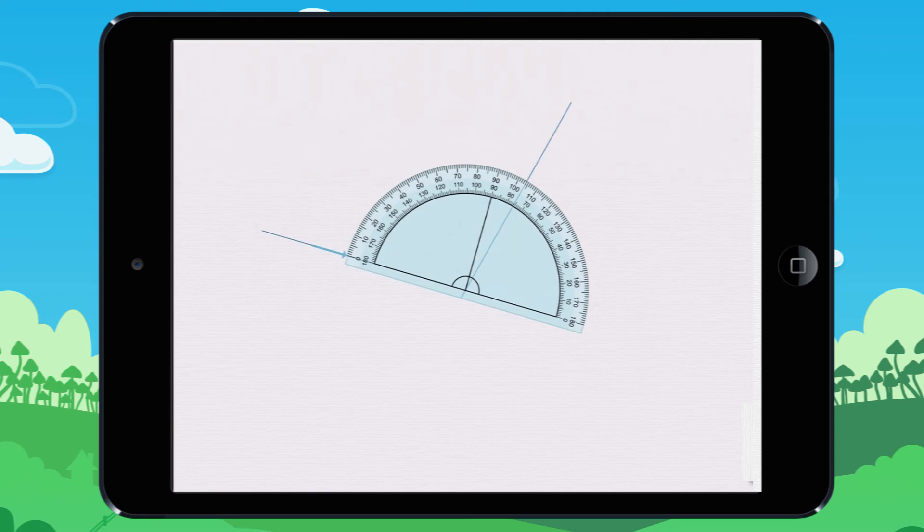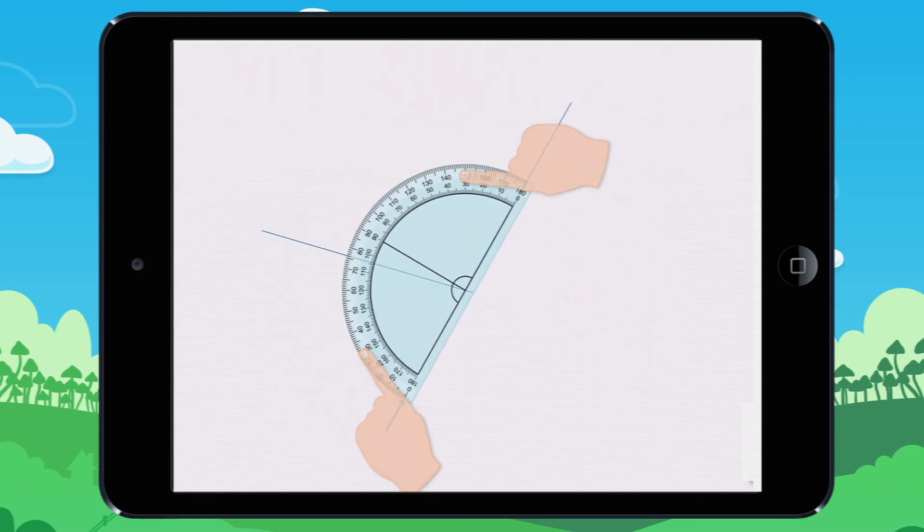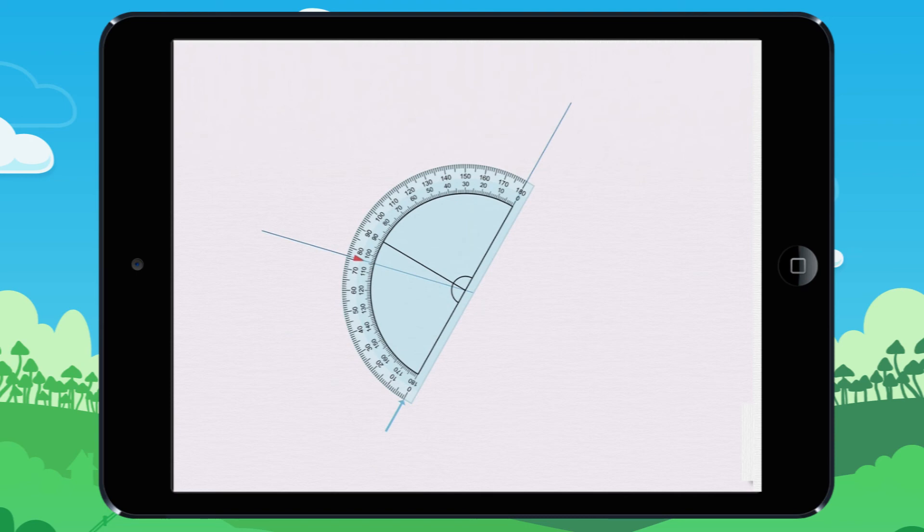Or we can place the other zero on the other line, and we read the mark here. We can read 104 degrees as well.